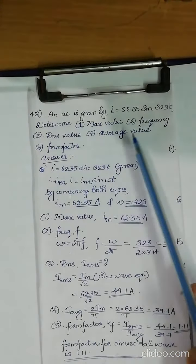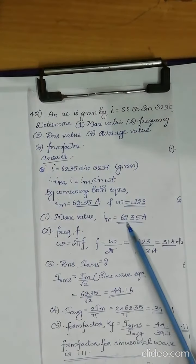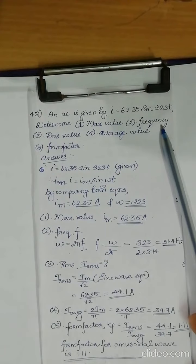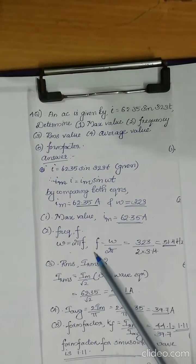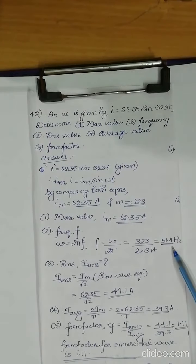Then the first question is to find the maximum value. So the maximum current value is 62.35. Now we have to find the value of frequency. When the angular frequency is given, the normal frequency f is calculated by omega divided by 2 pi. So the normal frequency is obtained.